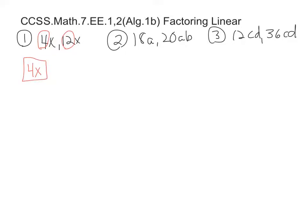And that's as far as you can go on that so far. Number 2, what can we pull out of what's common to both? We know that 2 goes into 18 and 2 goes into 20. So a factor of 2 is common. And also, A is common to both because we have 18A and 20AB. But B is not common. So it's kind of like the GCF.